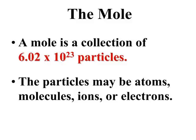A mole is simply a collection of particles — it happens to be 6.02 times 10 to the 23rd particles. When you say a dozen, you know that means 12. When you say a mole, you now know it means 6.02 times 10 to the 23rd.